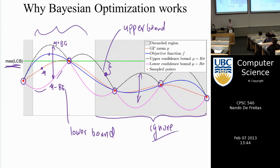When Masur and I set out to prove theoretical results, this branch-and-bound argument was the basis of the proof. We showed that under GP assumptions much of the space could be ignored, then focused on a small region, studying its local convergence using differential equations that Masur derived.